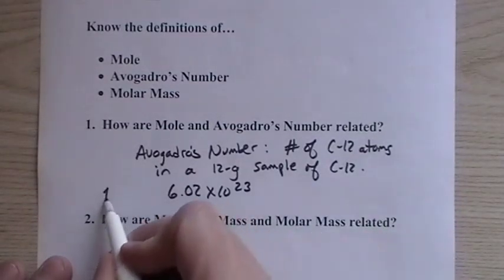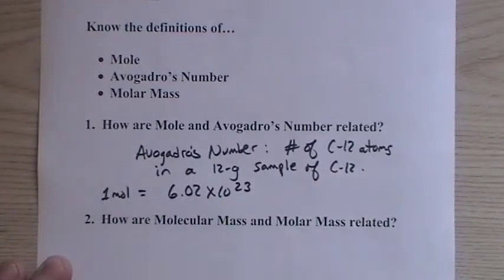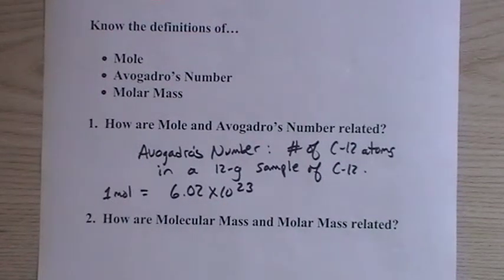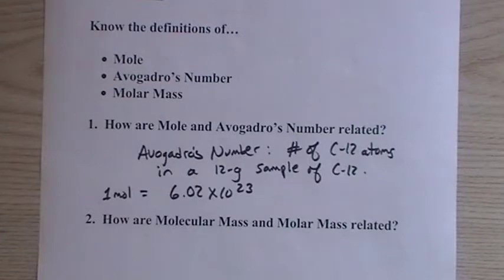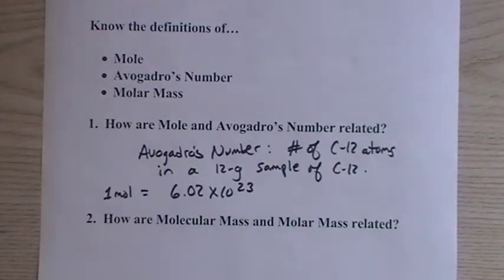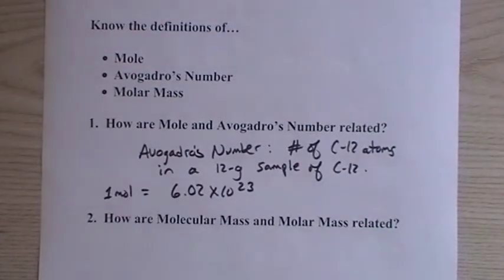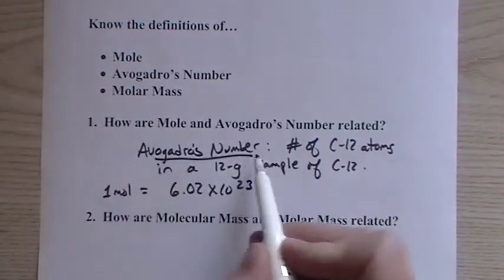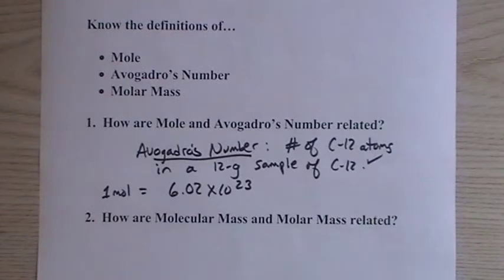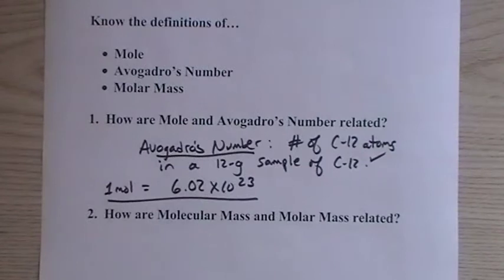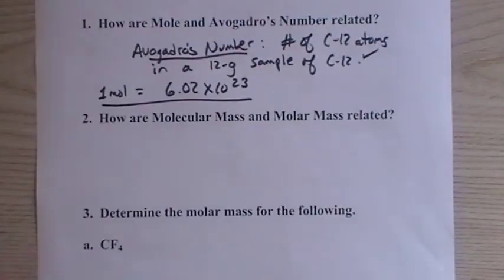And then a mole, one mole, is 6.02 times 10 to the 23rd of anything - atoms, ions, oranges, cars. So a mole is a number defined as Avogadro's number. When you're talking about Avogadro's number, you mean only the number of carbon-12 atoms. A mole then takes that number and expands it to molecules or ions.